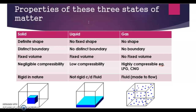Everything around us exists as solid, liquid, or gas. Solids have a definite shape with distinct boundaries and a fixed volume. They have negligible compressibility and a tendency to maintain their shape when subjected to outside force — solids may break under force but it is difficult to change their shape, making them rigid. For example, a wooden log has a definite shape and fixed volume and cannot be compressed.